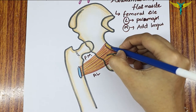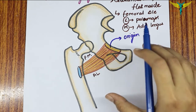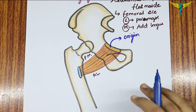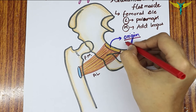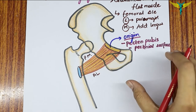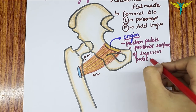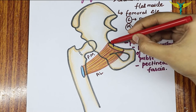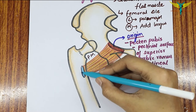The pectineus arises from three origins: the pecten pubis, the upper half of the pectineal surface of the superior ramus of the pubis, and the pectineal fascia. So these are the three origins of the pectineus muscle.